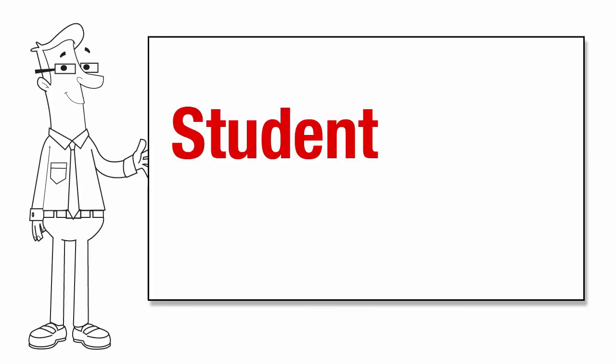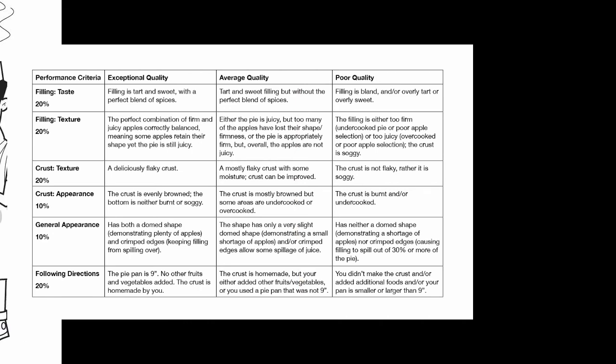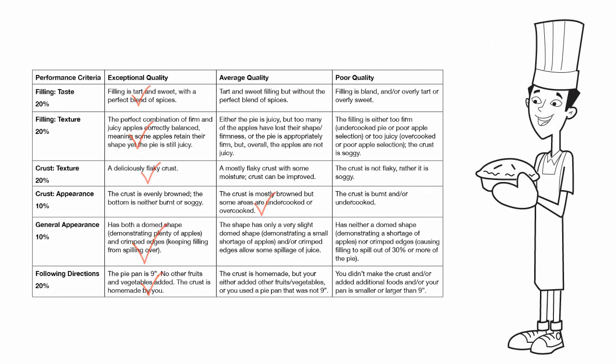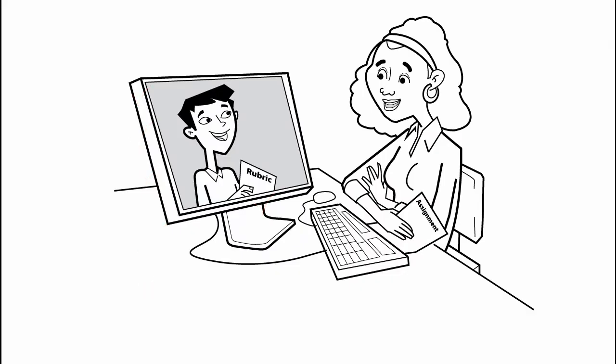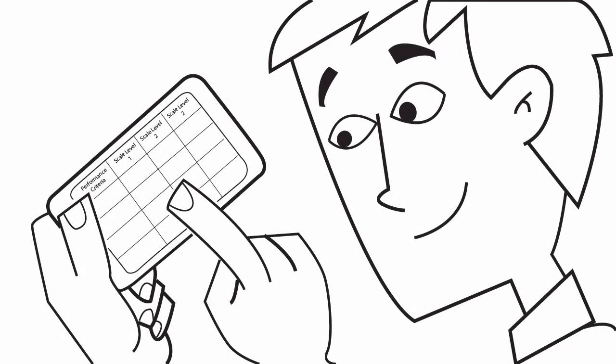Rubrics encourage student self-evaluation. With a clearly defined rubric, students can self-check their own work to gauge their progress. Students can even check each other's work against the rubric prior to submitting assignments. This strengthens comprehension and helps the student improve their grade. In short, students can perform an assignment according to the grade that they wish to earn.